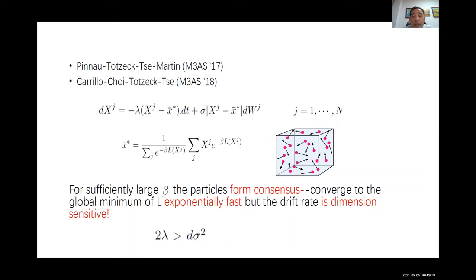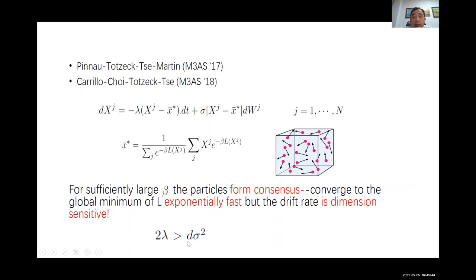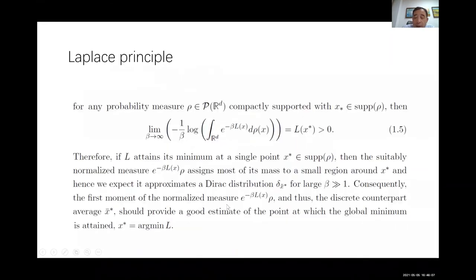There are conditions on the parameters lambda and sigma. Specifically, the drift rate lambda must be greater than one-half of sigma-squared times d, where d is the dimension of x. Under this condition and some conditions on the initial data, the method converges exponentially fast to the global minimum. The issue is that d can be very large in machine learning — easily thousands or millions — making the required drift rate very large, which can drive particles away from the global minimum.